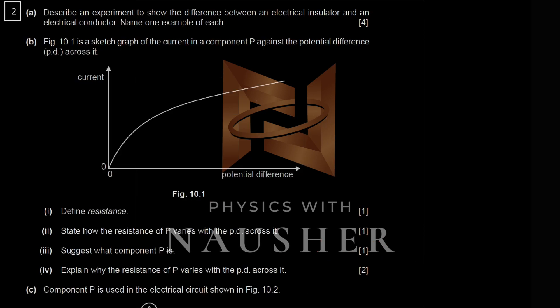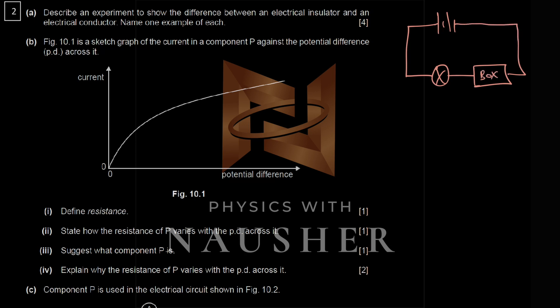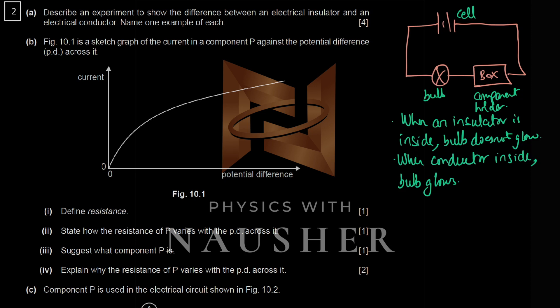Question two part a: describe an experiment to show the difference between an insulator and a conductor. Connect a cell, a bulb, and a component holder in a circuit. If an insulator is placed in the holder, the bulb does not glow. If a conductor is placed inside, the bulb will glow — that is the experiment.